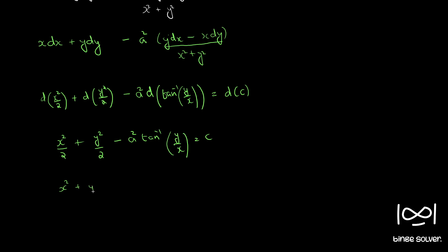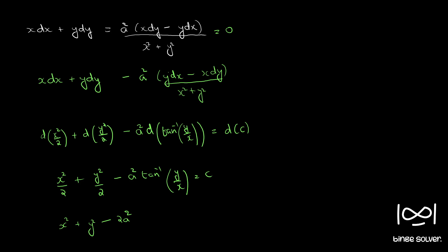There is a mistake — since we applied a negative sign inside, it becomes plus. Multiplying throughout by 2, we get x squared plus y squared plus 2 A squared tan inverse y by x equal to c. So you can obtain the answer in a similar manner if you identify all the terms as differentials of some kind of functions.